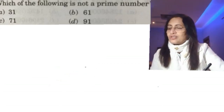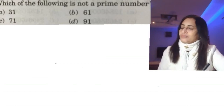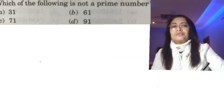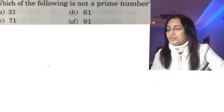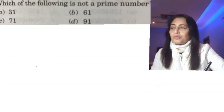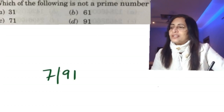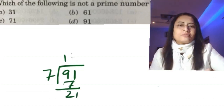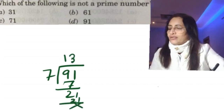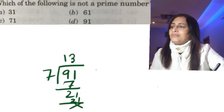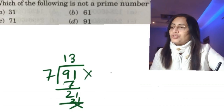Here the options are 31, 61, 71, and 91. Now 31 is not divisible by any other number, so it is prime. And 91 — our 91 is not a prime number. It is not a prime number. And which option is 91? Option D.